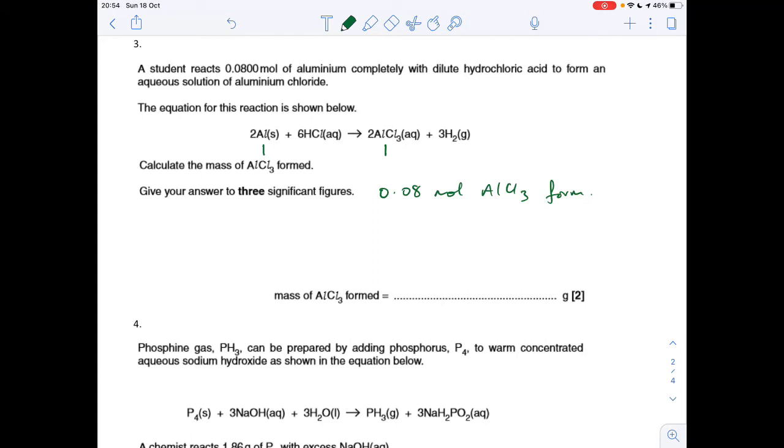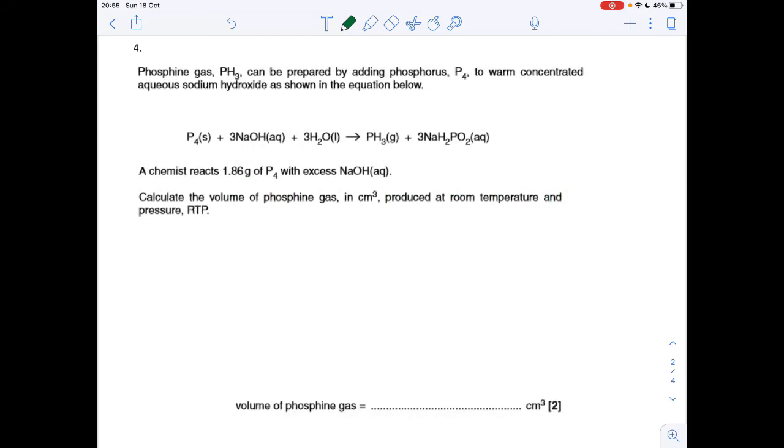All we need to do is work out the MR of aluminium chloride, then use that to work out the mass that's going to form. MR of aluminium chloride is 133.5, so mass is moles times MR. That's 0.08 multiplied by 133.5. We've got to give our answer to three significant figures, and that is 10.7.